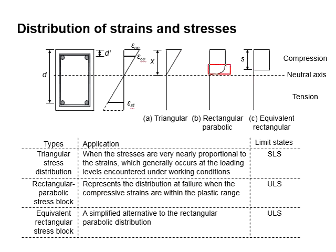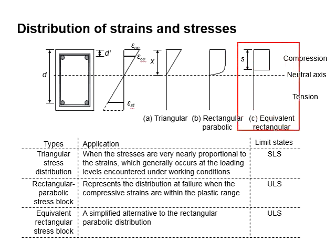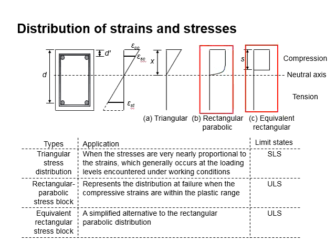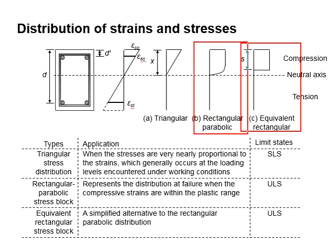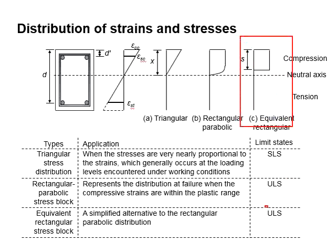Due to the parabolic shape, it is quite difficult to determine the resultant force based on the complex shape of the stress block. Therefore, for simplicity, an equivalent rectangular stress block is developed. It is used to represent the rectangular parabolic, giving an equivalent stress and forces acting on the sections. In other words, the simplified equivalent rectangular stress block is used to replace the rectangular parabolic during the analysis of the section at the ultimate limit state.